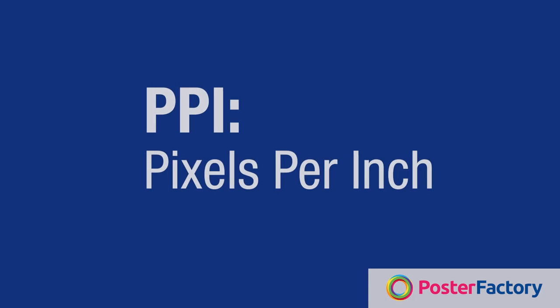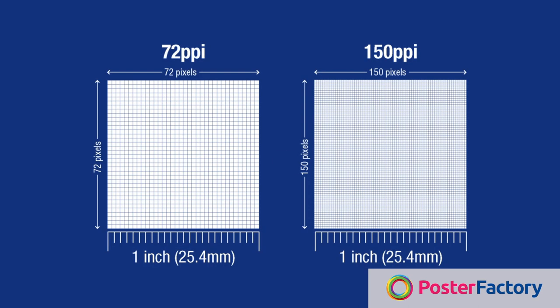In printing terms, image resolution is often referred to as PPI, or pixels per inch. This describes how many pixels are concentrated in a given area — in this case, an inch.